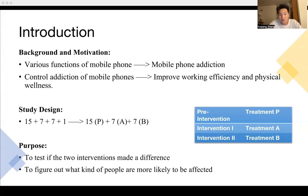For our study design, our analysis is based on three treatments: the pre-intervention, also treatment P — placebo; intervention one, treatment A, which is knowing the median value of the screen time information; and intervention two, treatment B, which is knowing the minimum value of the screen time information.